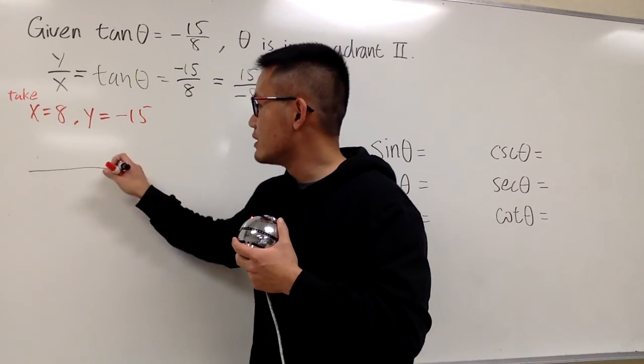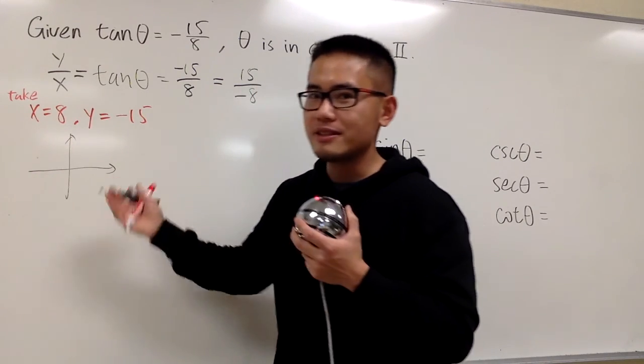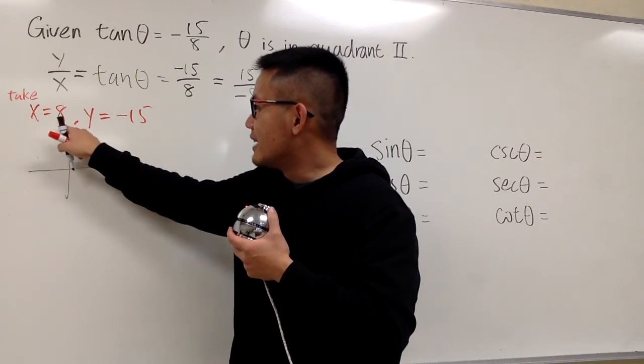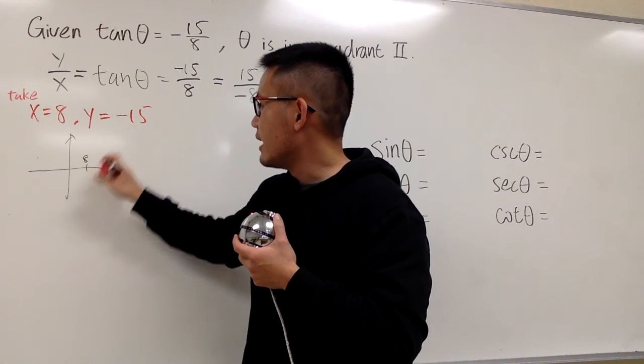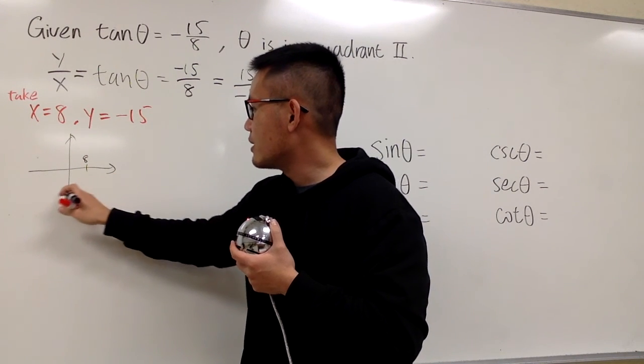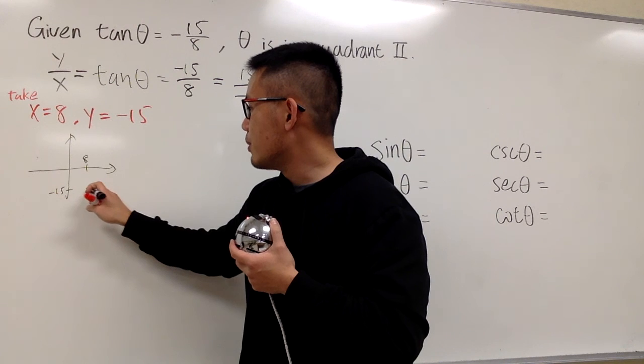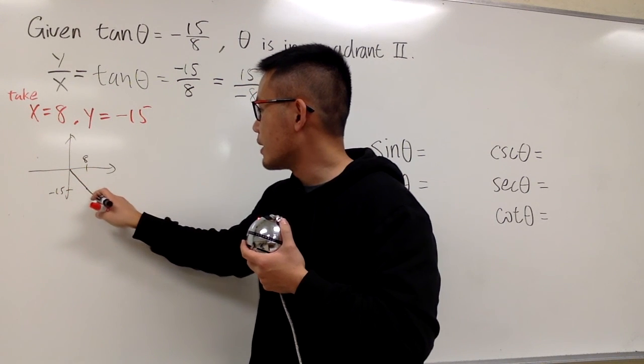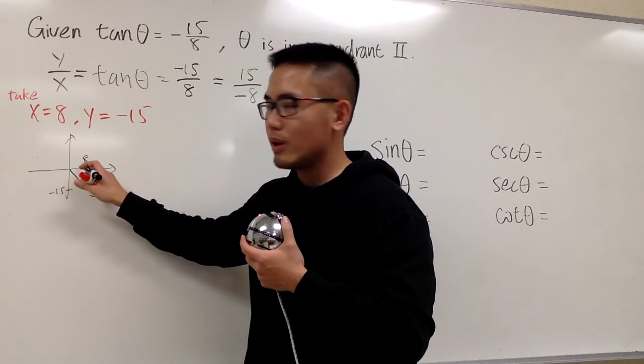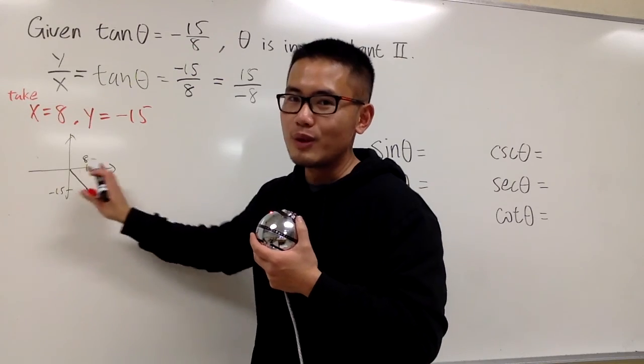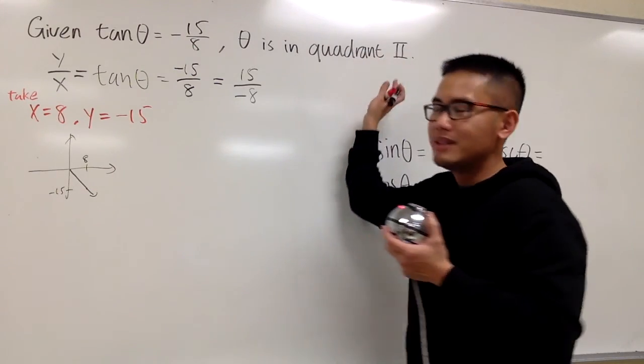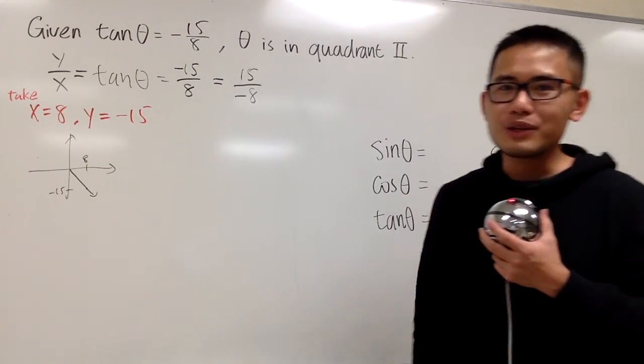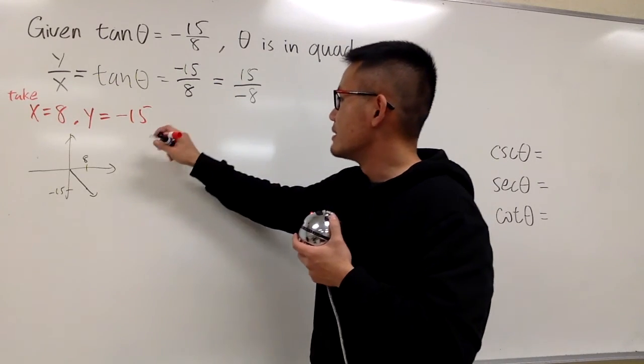Anyways, in this case, if you draw this real quick, just a small one, because this is not the answer. x is 8, which is, let's say, it's right here, it's positive 8, and y is negative 15, which is down here, negative 15. This is the point, and you see the terminal side is right here, and the angle, well, this is what? In the fourth quadrant, that's not what we need. We need to have the second quadrant. So it's not this.